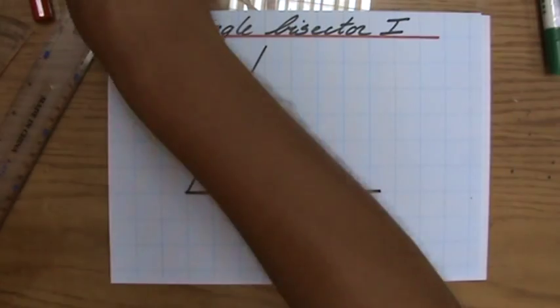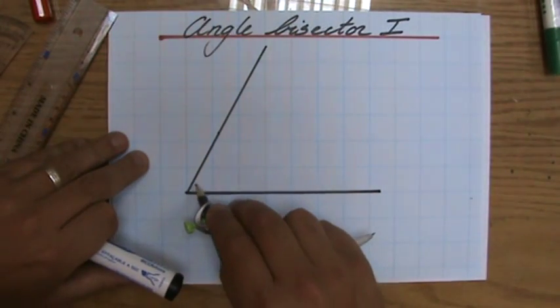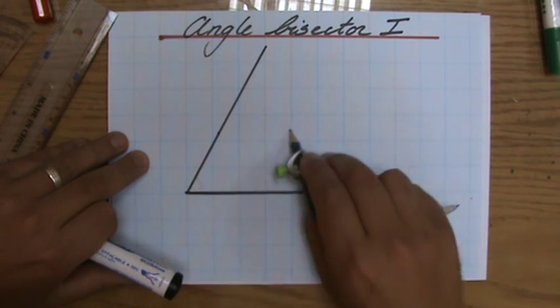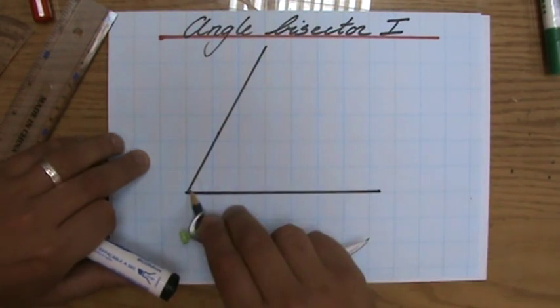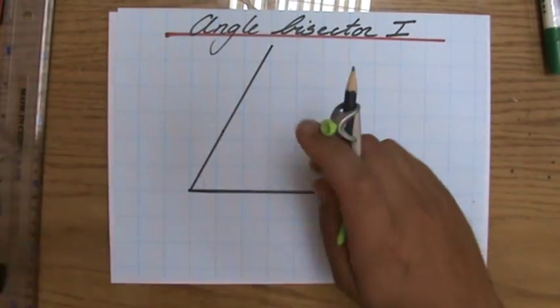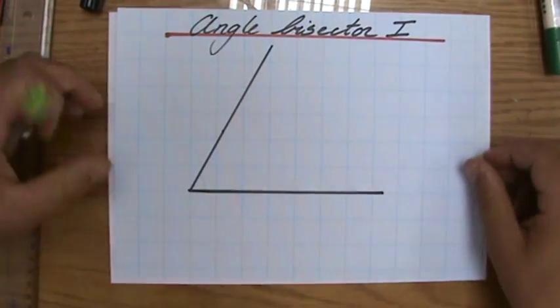So my bisector, which is a line, is going to divide this 60 degree angle into two equal parts of 30 each. So this angular bisector is going to look like this. But you cannot just measure 30 degrees and draw the line. No, you have to use your compass to construct it. I'm going to show you how.